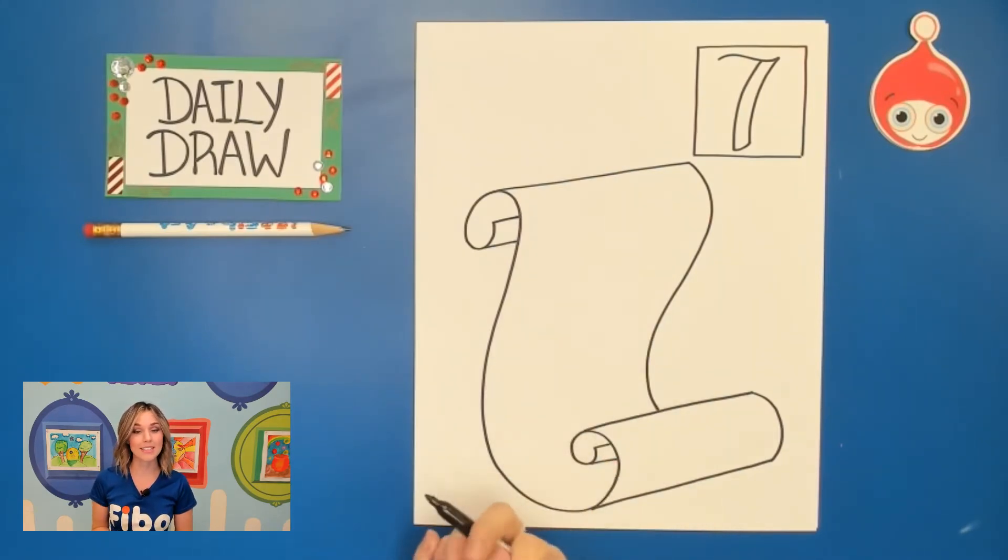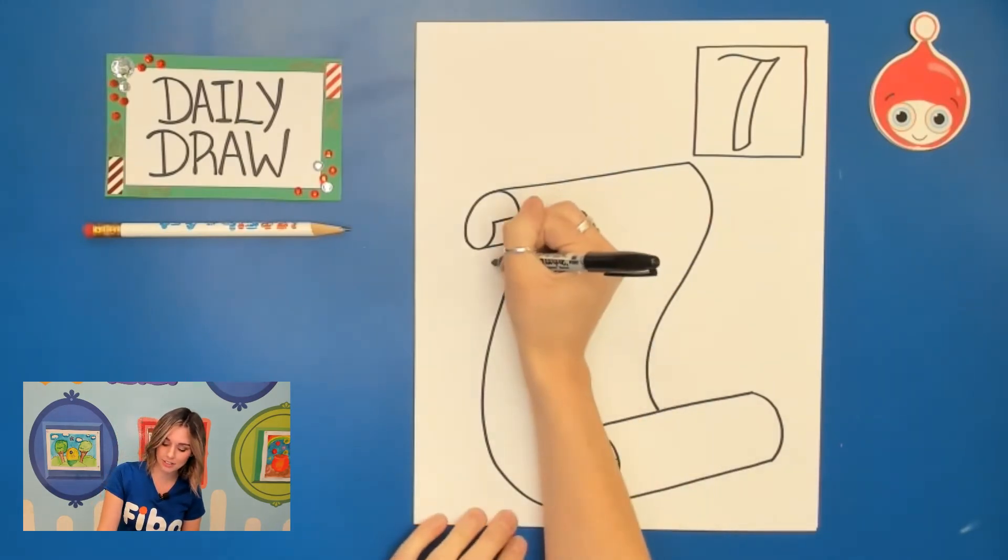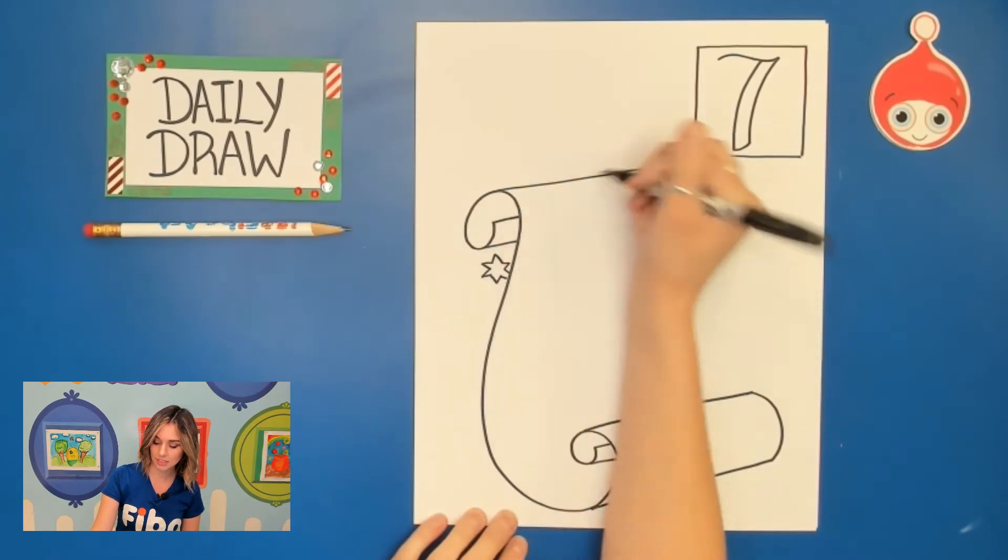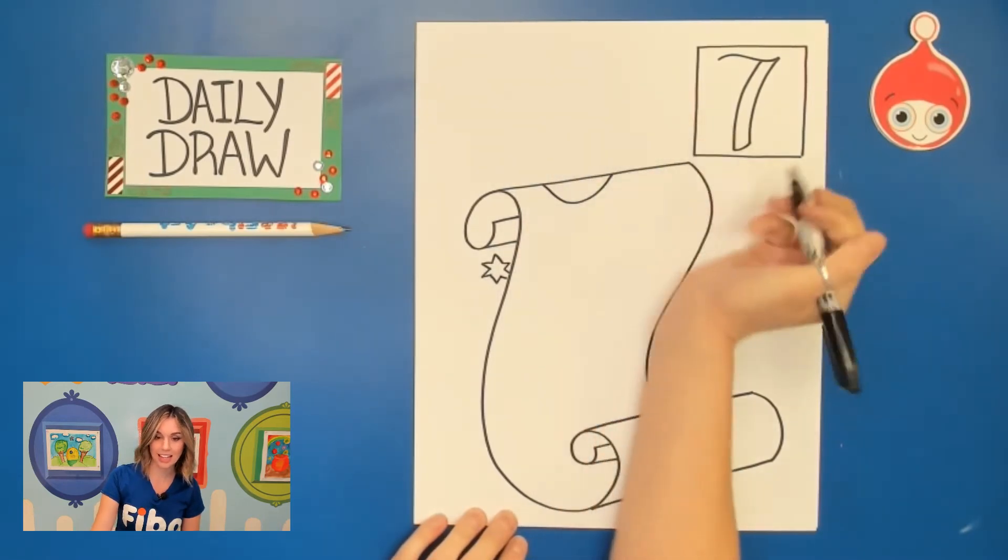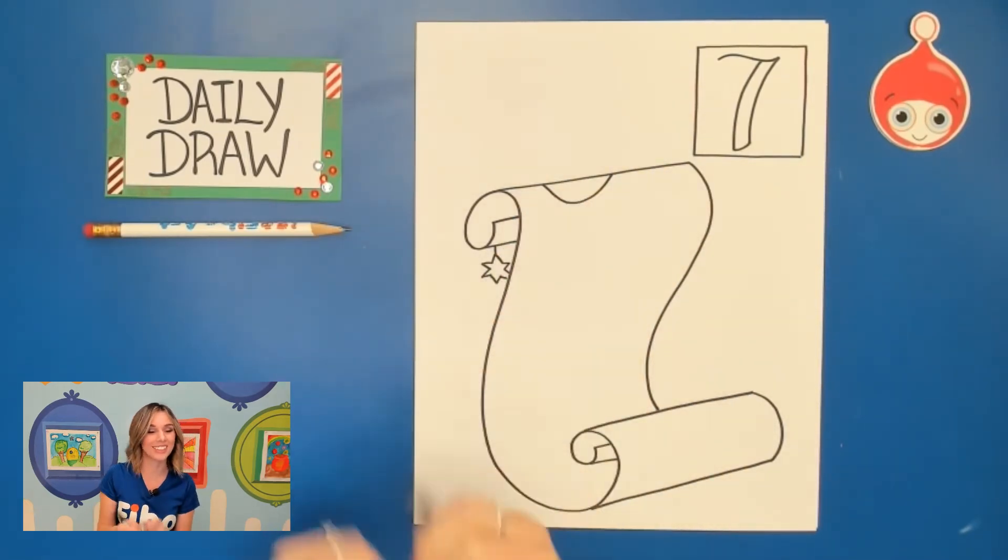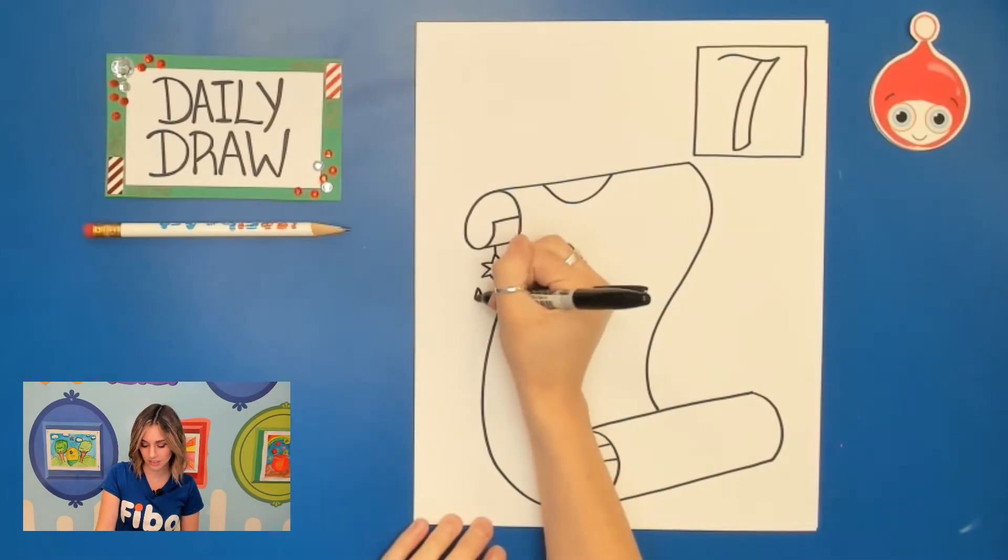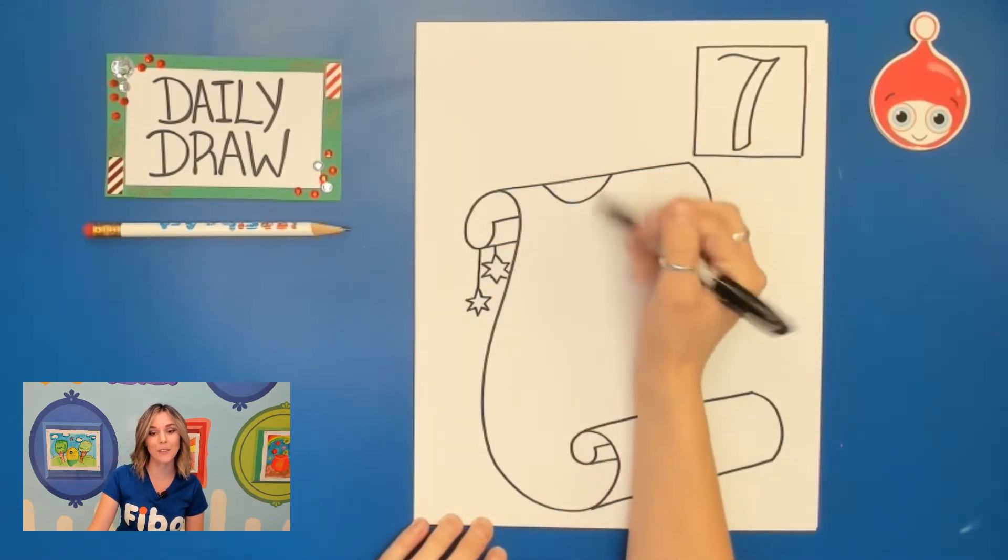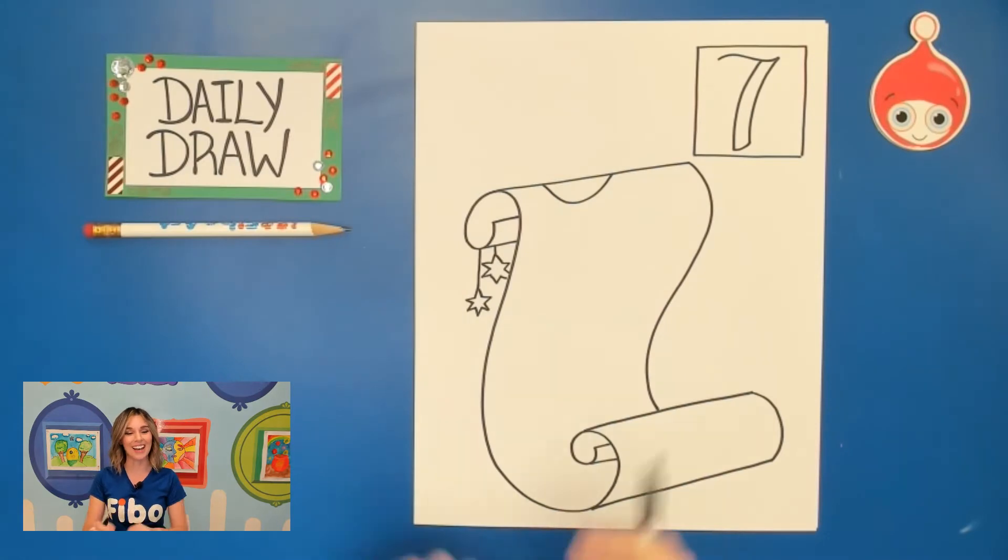Now if you do want to make Santa's list a little bit more decorative, you could add some beads or stars hanging from the list. You could add some string that's used to tie the list together. I'm just going to add some stars and some string so that way it just looks more like he wrapped it up and that's why it's curving.